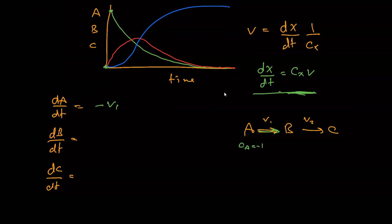What about C? Let's do C because that's the next easy one. Well, C is being made at a rate V2, so that's positive. So it's being made at a rate V2. Those are the two differential equations for A and C.